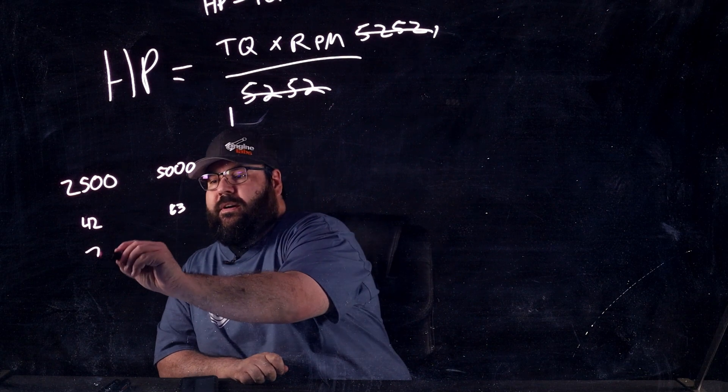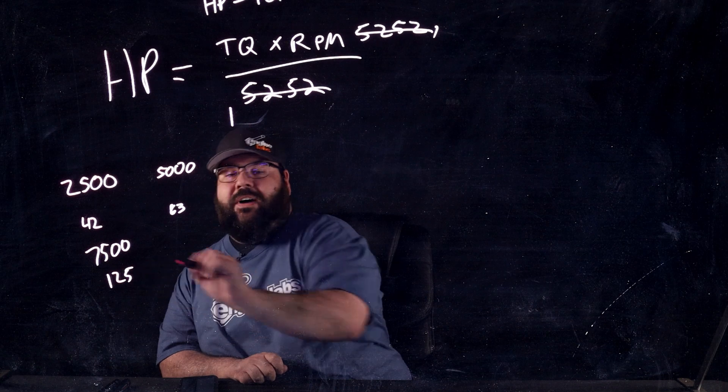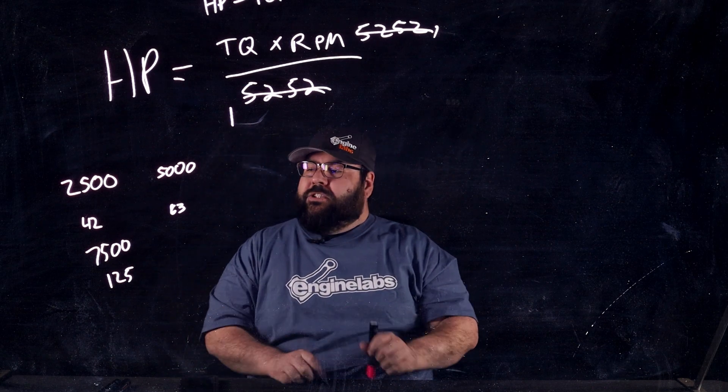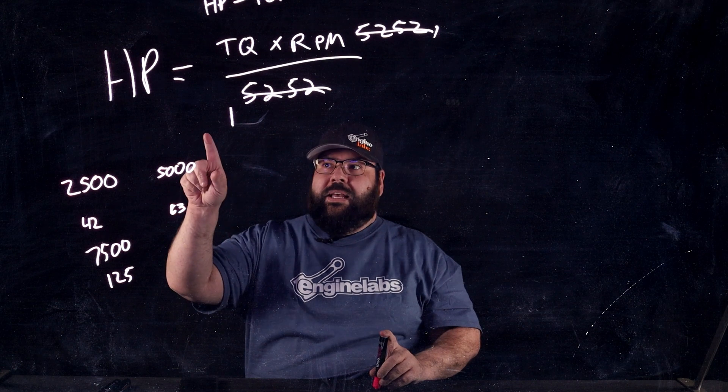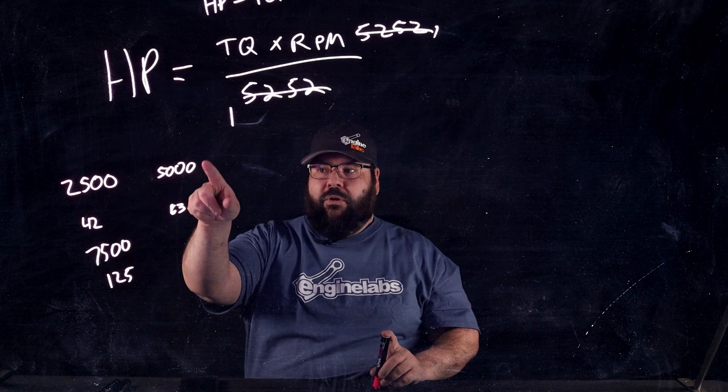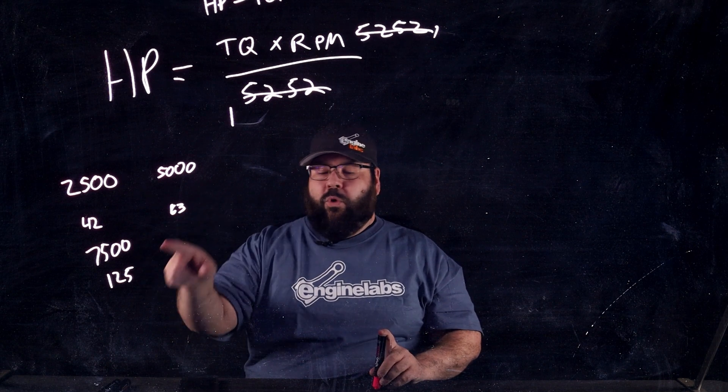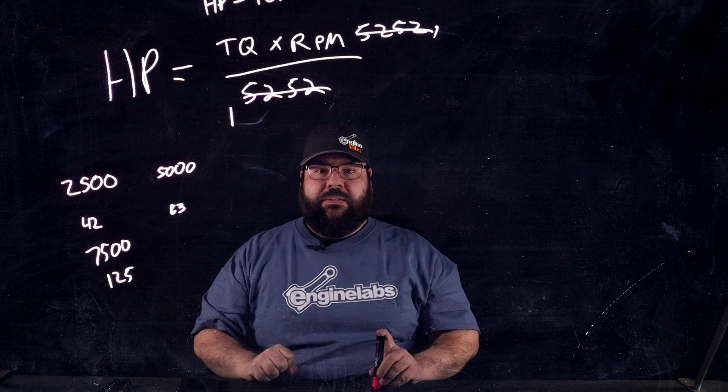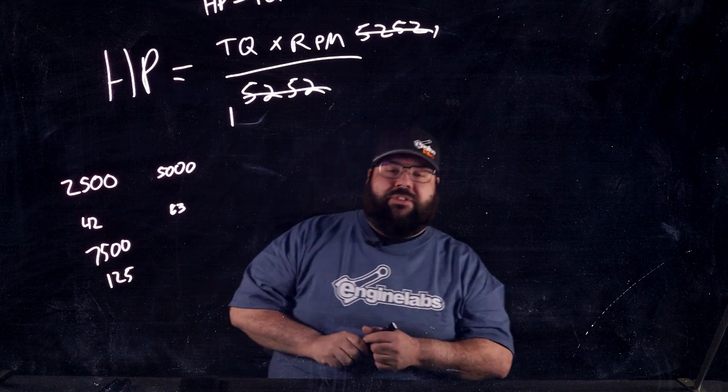And then let's jump up to 7500. And then we get a nice even 125 impulses per second. So, as you can see, going from 2500 to 5000 RPM, if we have the same torque, our horsepower should double. And then going from 5000 RPM to 7500 RPM, we're going to increase by about 50%. So, let's go ahead and actually run some numbers and see if that's correct.